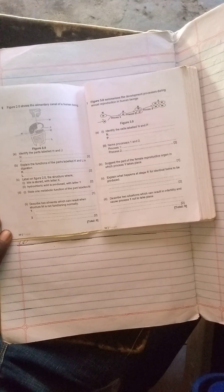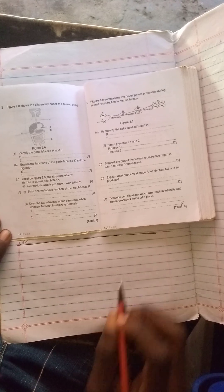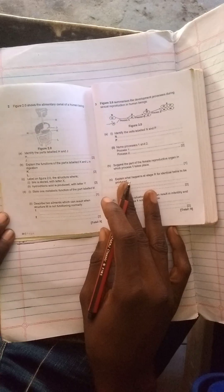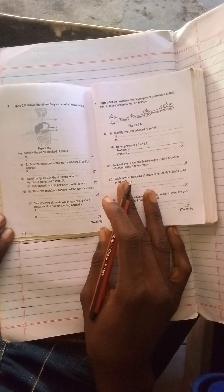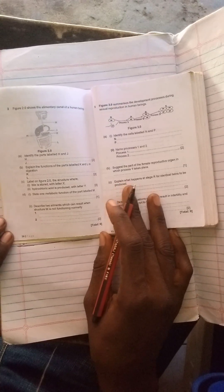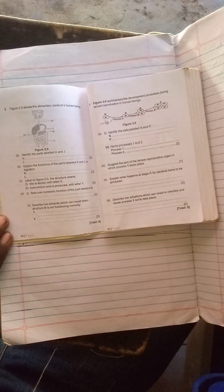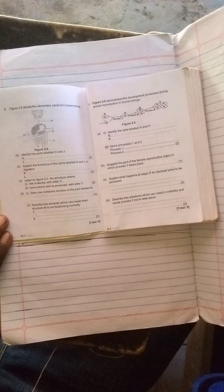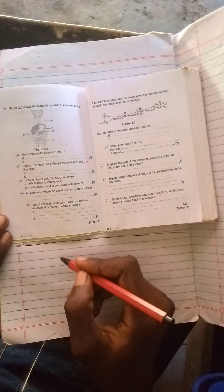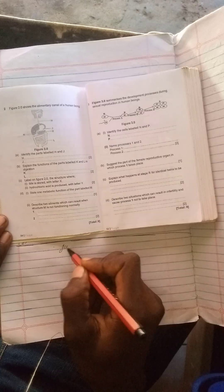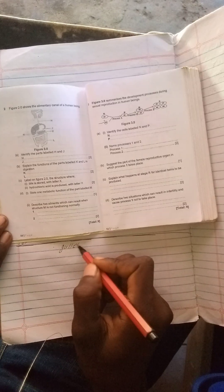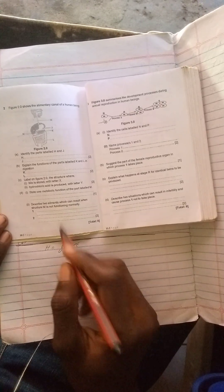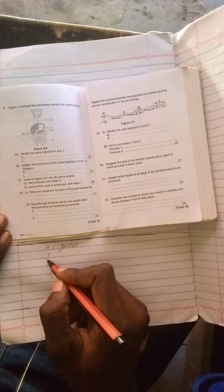I don't think there's need to write anything. For the spellings, I'll be spelling them where it's necessary. Question 1 reads: identify the parts labeled H and J. The part labeled H is the gullet, spelled G-U-L-L-E-T. Part J is the stomach.